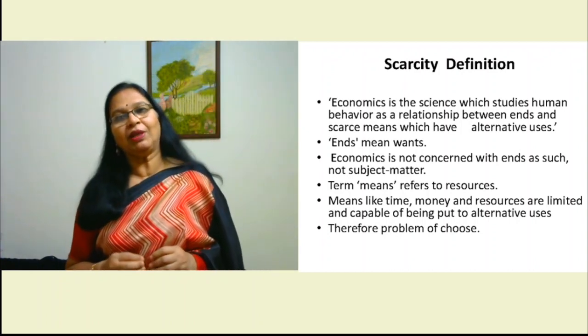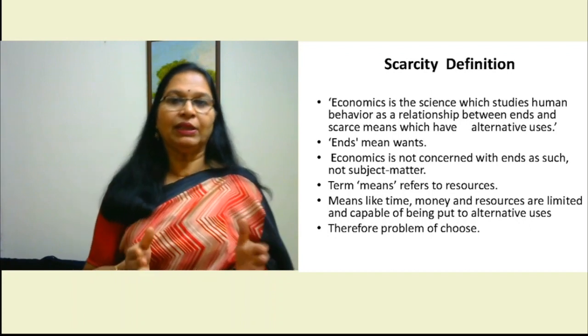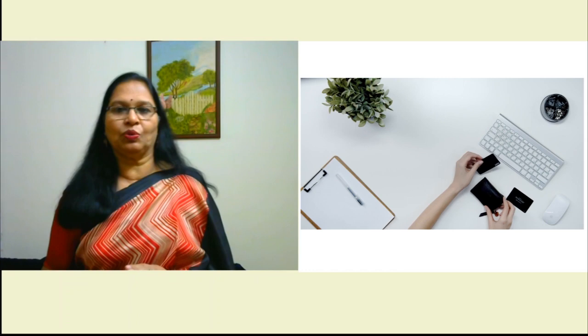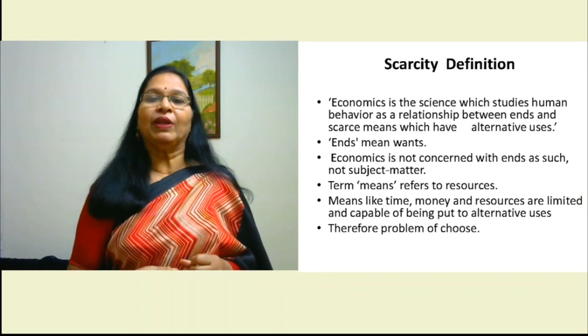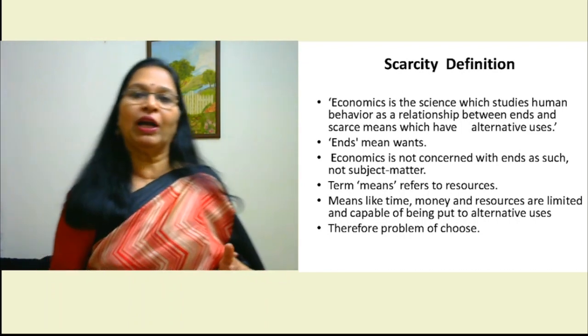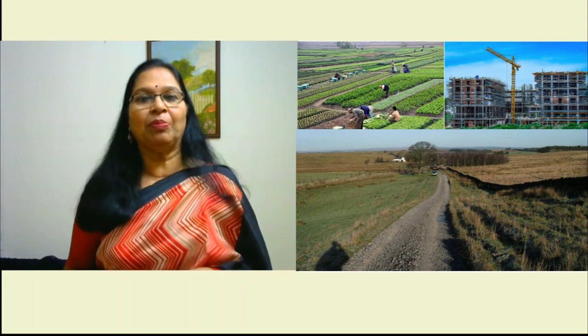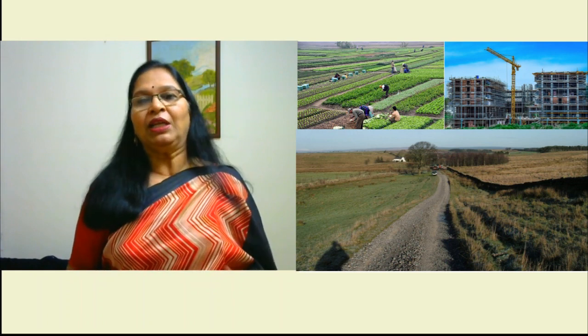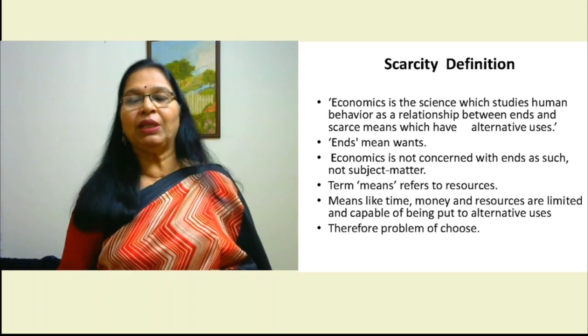When Robbins studies human behavior, he is clear it is not all human behavior — that is studied in psychology, sociology, and political science. Economics studies only that part of human behavior dealing with material resources. Human beings have unlimited wants, but the resources available to satisfy those wants are very limited. Furthermore, all resources have alternative uses: a small piece of land can be used for agriculture, as a meadow, for construction, left fallow, or used for a road — so what we do with it is a matter of choice.